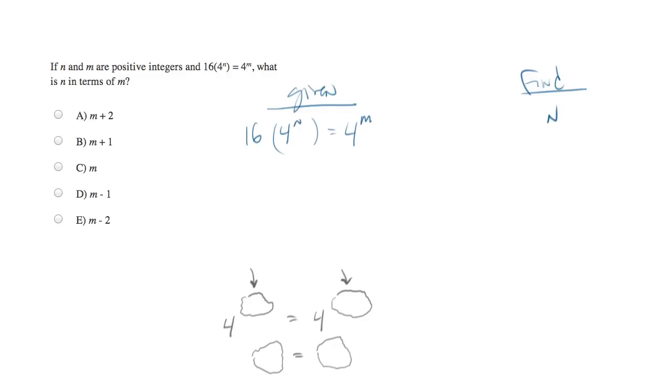If you happen to notice that 16 is a perfect square, you can use a little trick by converting that into 4 squared. So I'm going to do that. 4 squared is equal to 16. I'm going to plug that 4 squared in here instead. And we're going to end up with 4 squared times 4 to the n equals 4 to the m. Now we're getting closer.